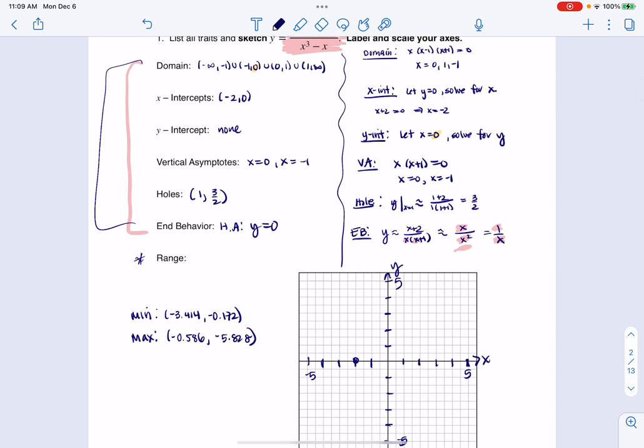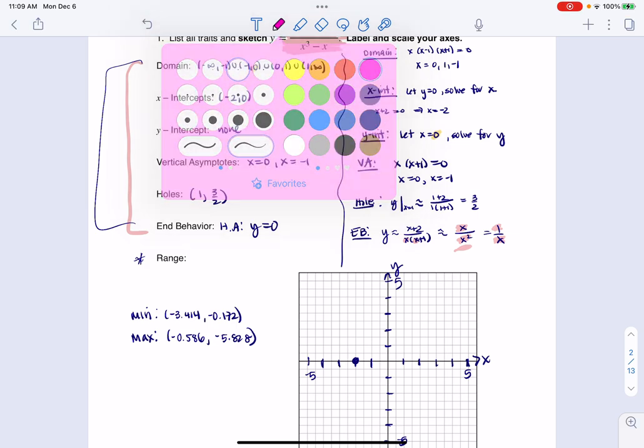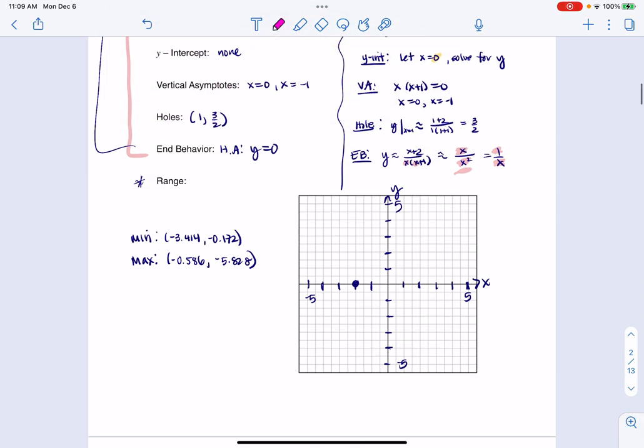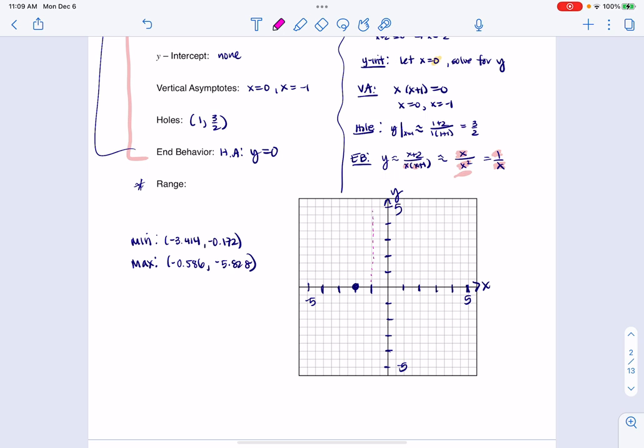The first thing I have is an x-intercept at negative 2, 0. I have no y-intercepts. I have two vertical asymptotes. And since I'm on this iPad, I'm actually going to use different colors here just so we can see it. I have one at negative 1, and I have one on the y-axis, or really, we can call that the line x equals 0. And then I have an end behavior asymptote at y equals 0.